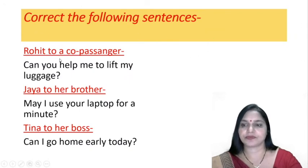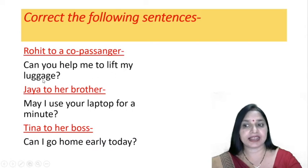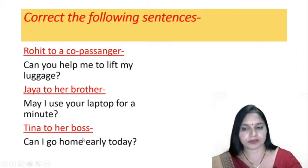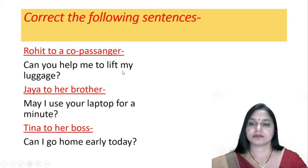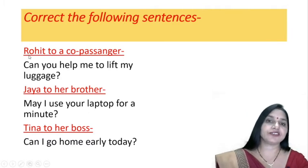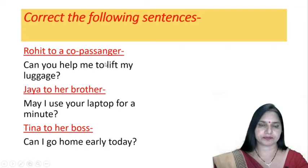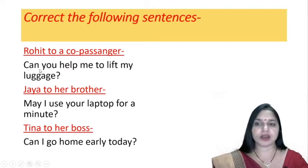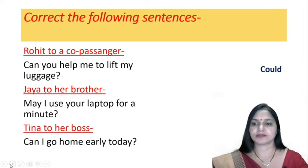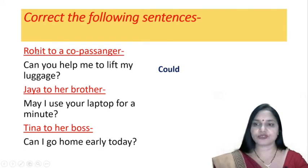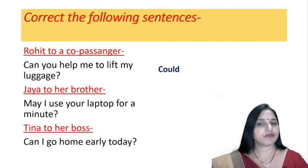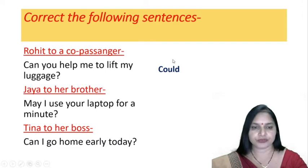Now, correct the following sentences. Rohit is talking to a co-passenger while traveling. He says, 'Can you help me to lift my luggage?' Now pay attention to the relationship between the speaker and the listener. Co-passengers are usually strangers, and you have to express politeness and hesitation in your language. So Rohit should have said, 'Could you help me lift my luggage?' — using 'could' with strangers.